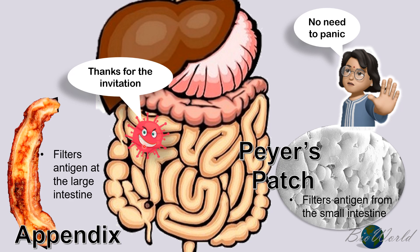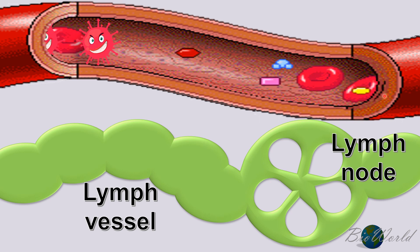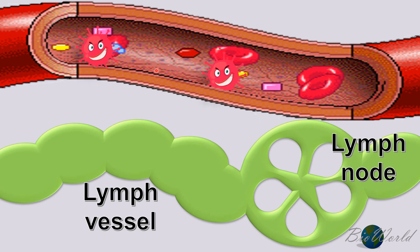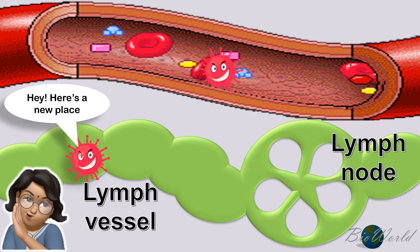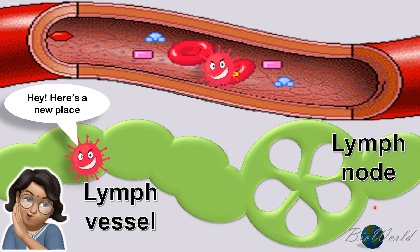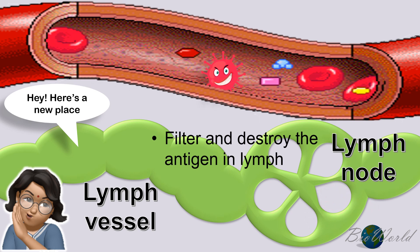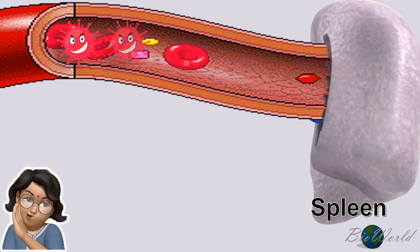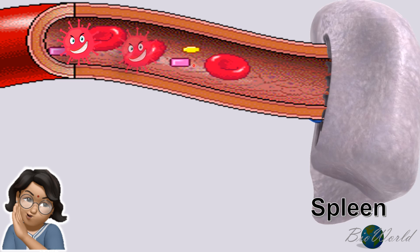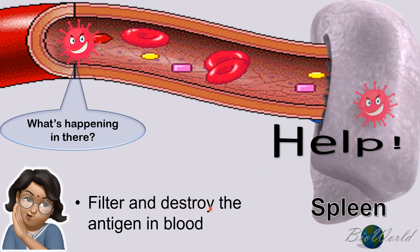Now, what about pathogens that continue to remain in the digestive system? These pathogens will travel into the blood circulatory system, and some may be forced out into the lymphatic system. In the lymphatic system, there are places called lymph nodes where these pathogens are filtered and destroyed. Pathogens that remain in circulation may also travel into the spleen, where they are once again filtered and destroyed.